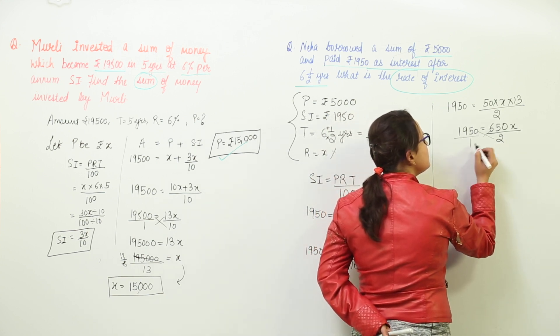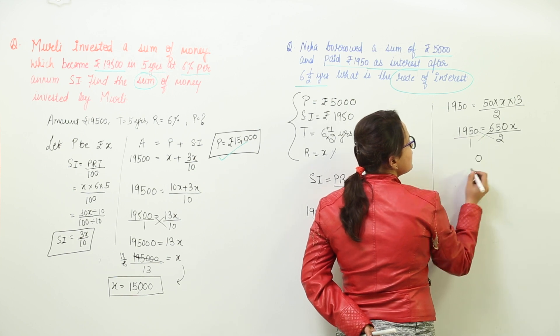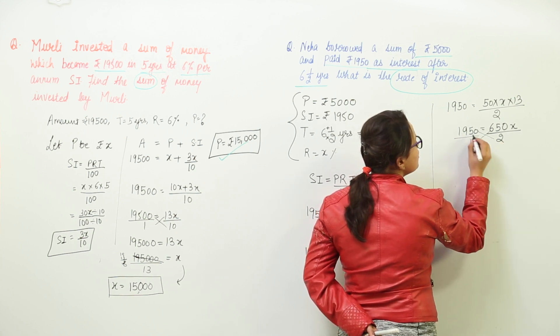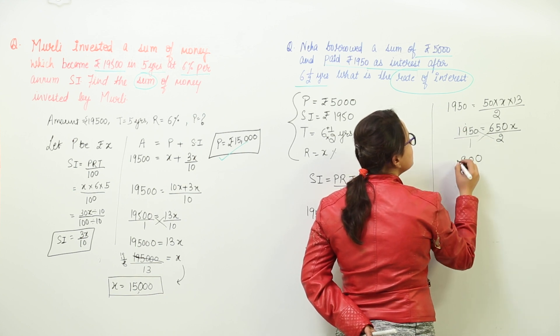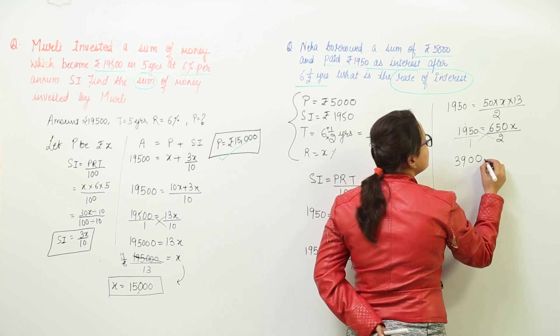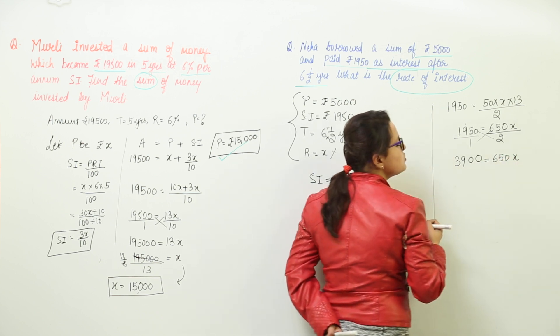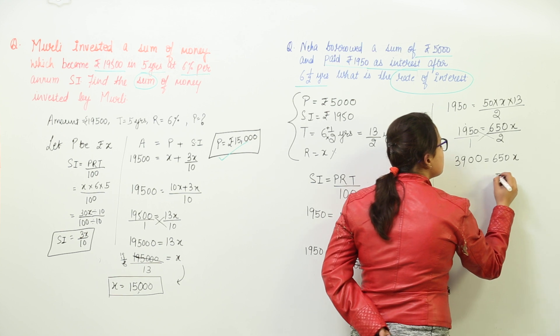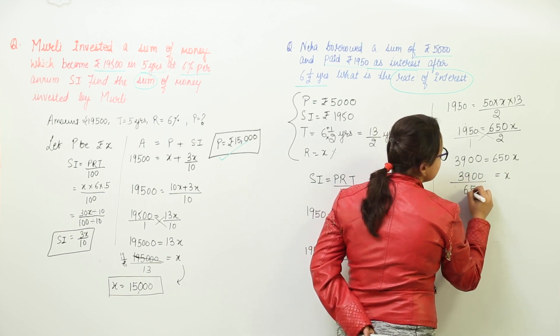We can continue solving this by taking the cross multiplication here we get 2 into 1950 gives you 2 zeros are 0, 2 fives are 10 and 1, 2 nines are 18 and 1, 19 and 1, 2 ones are 2, 3900 equal to 650 into X. Now X would come out to be equal to 3900 over 650.